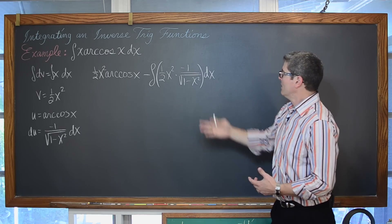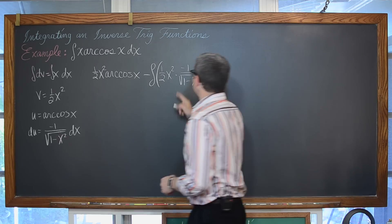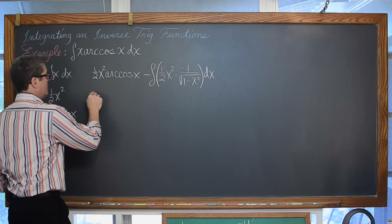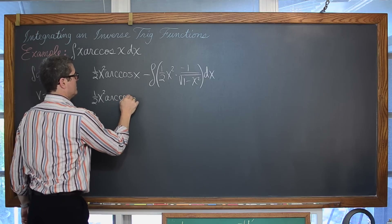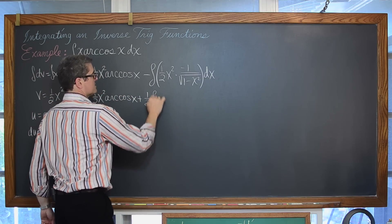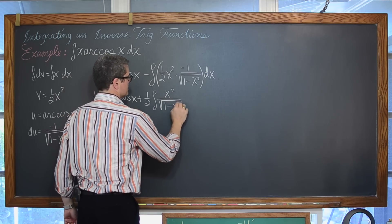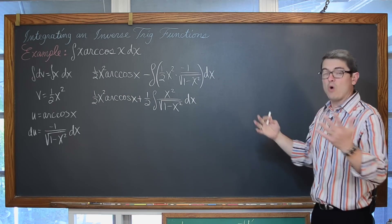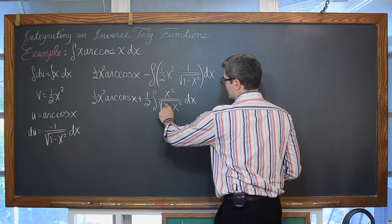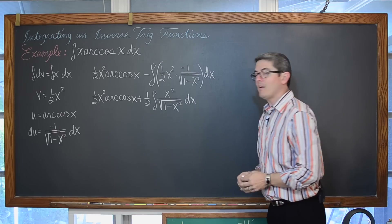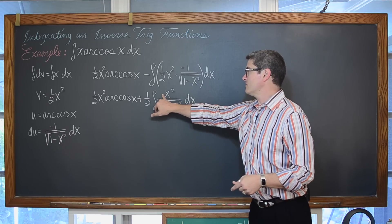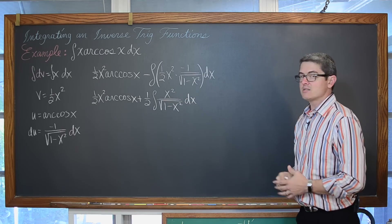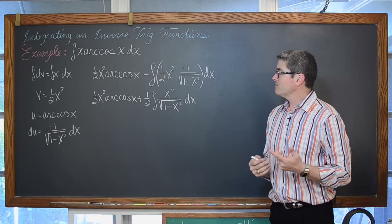This is starting to look more like our other problems where the integrand has a sum or difference of squares in it. We are going to move that negative out front, move the one-half out front and rewrite it. So we are going to have one-half x squared arc cosine of x plus one-half times the indefinite integral of x squared over the square root of one minus x squared dx. Now why can't we just let u be one minus x squared? Well then du is going to be negative two x, but we have a degree of two in the numerator, not a degree of one. So that is not going to work.